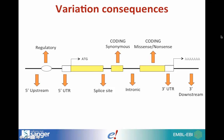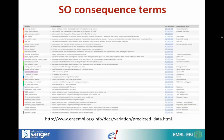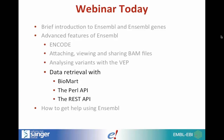The VEP uses sequence ontology terms for consequences — for example, missense or synonymous in the coding sequence, or regulatory SNPs if they fall in a region determined by our regulatory build, which is based on ENCODE for human and mouse, and also Blueprint for human. Using sequence ontology terms keeps things consistent across bioinformatic projects, making it easier for users to compare data. A URL is provided to see all effects and consequences.